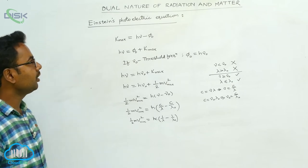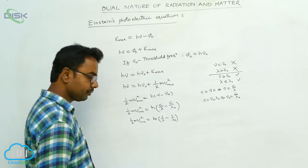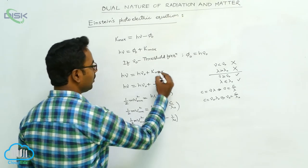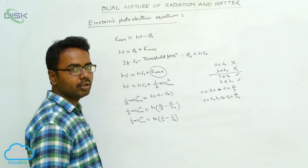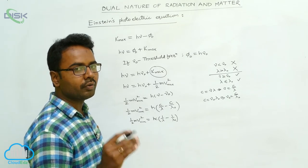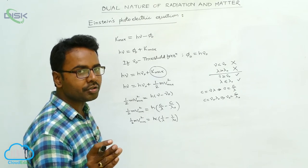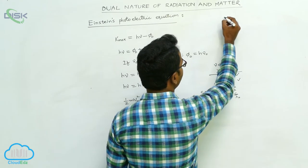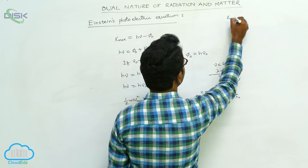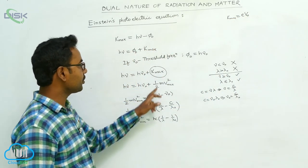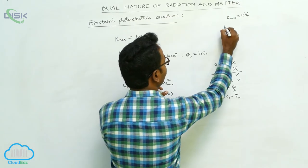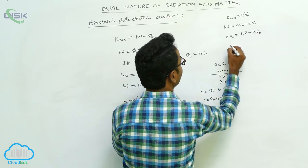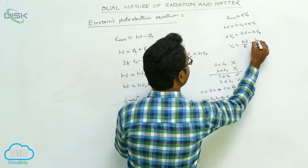These are the various forms of Einstein's photoelectric equation. We can also write that the maximum kinetic energy of photoelectrons equals eV₀, where V₀ is the stopping potential given to the collector plate — the work done by the stopping potential V₀ stops the electrons, so K_max = eV₀. Substituting K_max = eV₀ into the equation: hν = hν₀ + eV₀, and therefore eV₀ = h(ν − ν₀), giving V₀ = hν/e − hν₀/e.